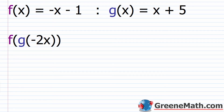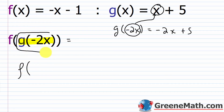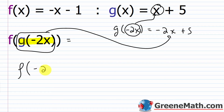Again, I'm going to start with the inner part. What is g of negative 2x? All I'm going to do is plug negative 2x in for x in g of x. So this would be negative 2x plus 5. Super simple. So now this becomes f of negative 2x plus 5.